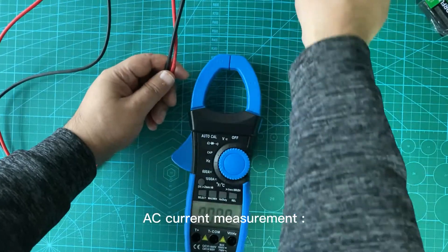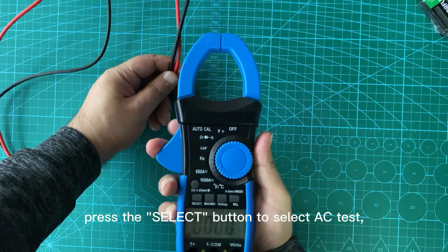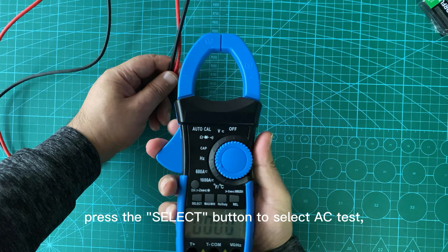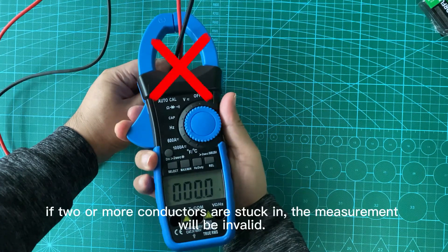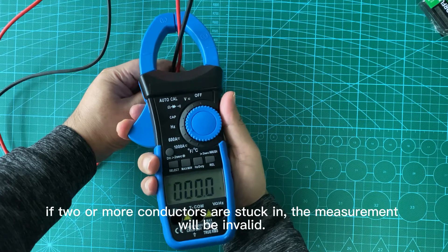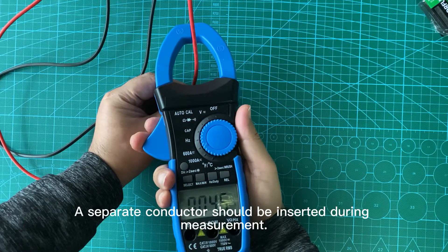AC current measurement: Set the rotary switch to the 600A position. Press the select button to select AC test. Press the trigger to open the jaw. If two or more conductors are clamped, the measurement will be invalid. A separate conductor should be inserted during measurement.